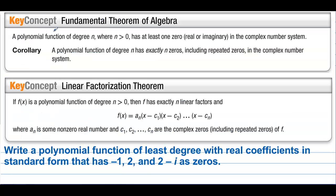Fundamental Theorem of Algebra: a polynomial function of degree n where n is greater than 0 has at least one zero, real or imaginary, in the complex number system. Corollary: a polynomial function of degree n has exactly n zeros, including repeated zeros, in the complex number system. Linear Factorization Theorem: if f of x is a polynomial function of degree n greater than 0, then f has exactly n linear factors, where a sub n is some non-zero real number, including complex zeros.